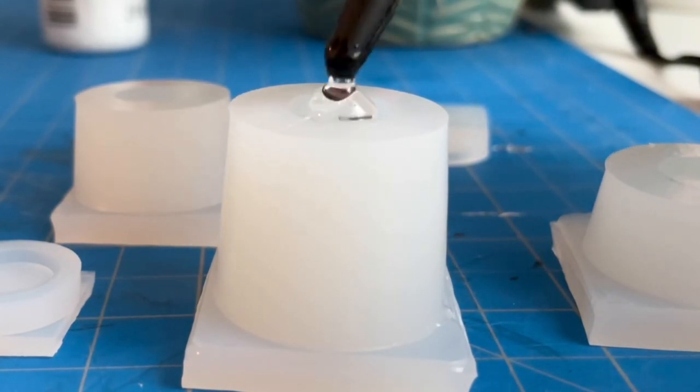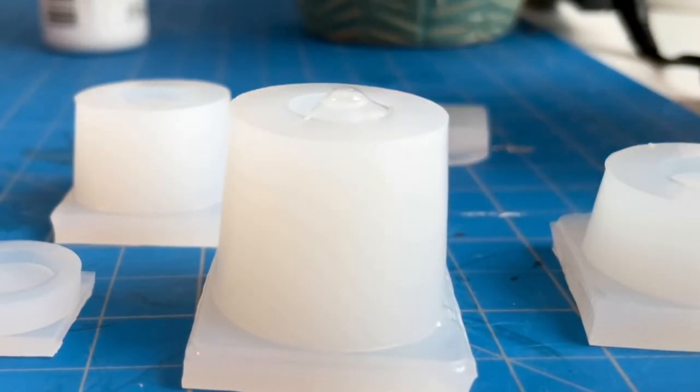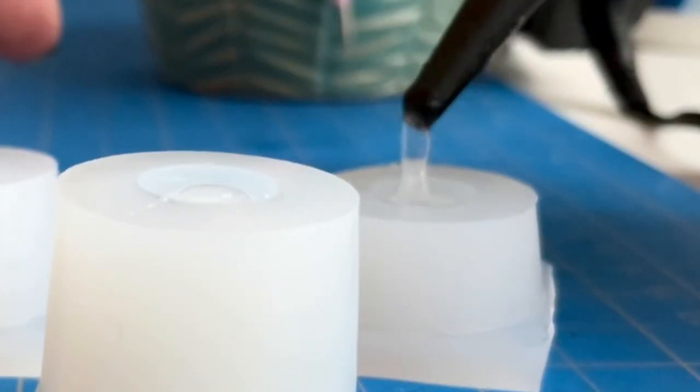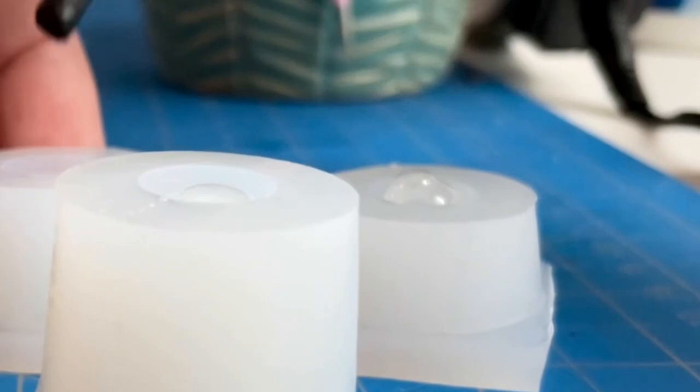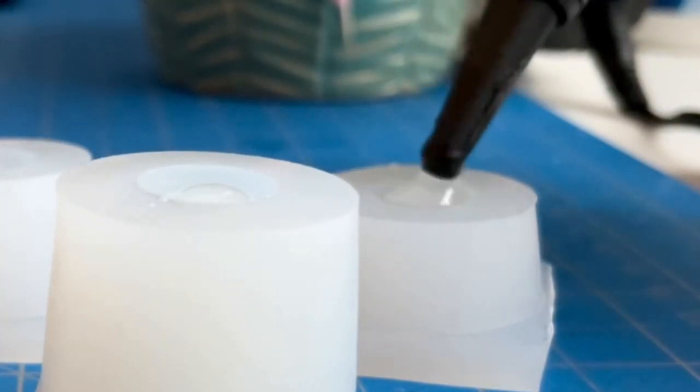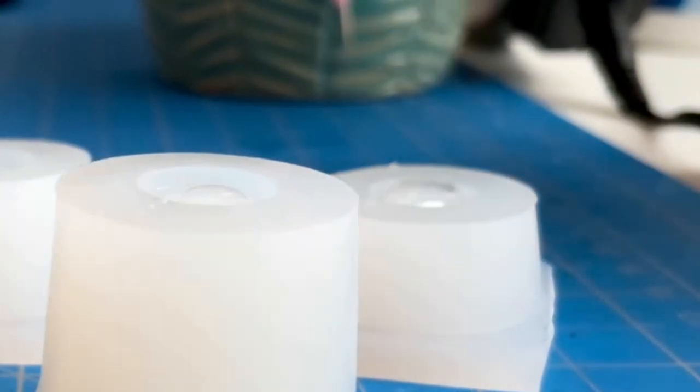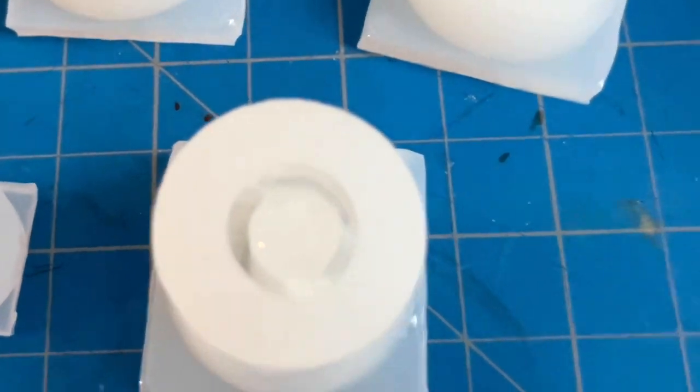I poured the resin directly from the bottle inside of the mold and after each squeeze I let the resin fall to the bottom. And you want to do this slowly so that you don't form any air bubbles and if there are any air bubbles forming try to pop them right away.